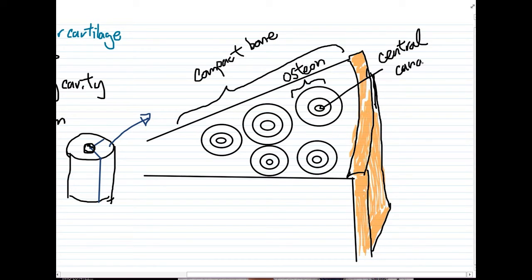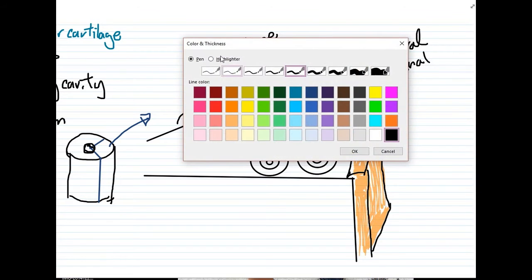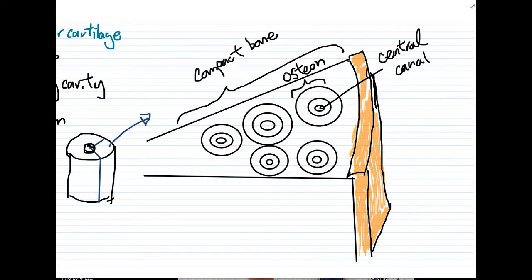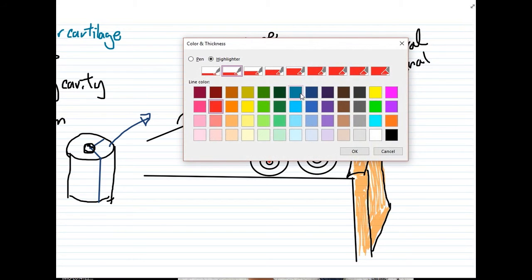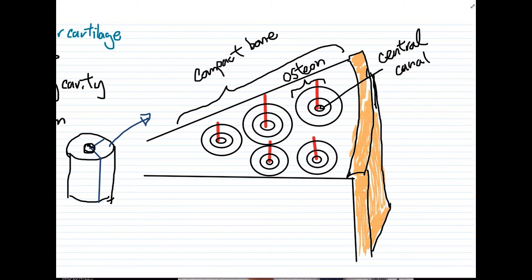So what comes out from the central canal? That's where the blood vessels are going to come out. So you can see that here is a blood vessel coming out, a blood vessel, a blood vessel, so on and so forth. Of course, if you see an artery, you would expect to have a vein coming out as well. But for simplicity's sake, I'm not going to show it. Maybe I'll just draw one to show you. Okay, just imagine that would be the same for all of them.